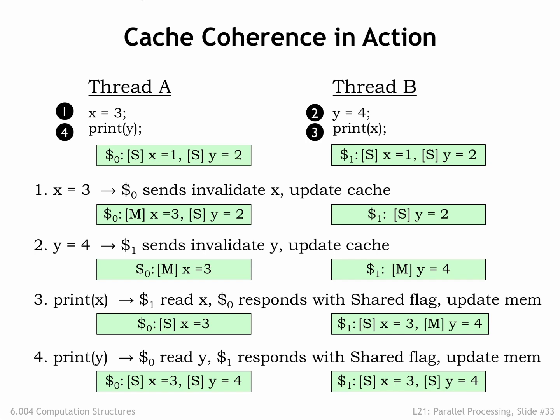Finally, in step 4, thread A needs the value for Y, which results in a similar transaction on the snoopy bus. Note that the outcome corresponds exactly to that produced by the same execution sequence on a time-shared core, since the coherence protocol guarantees that no cache has an out-of-date copy of a shared memory location, and both caches agree on the ending values for the shared variables X and Y. If you try other execution orders, you'll see that sequential consistency and shared memory semantics are maintained in each case. The cache coherency protocol has done its job.